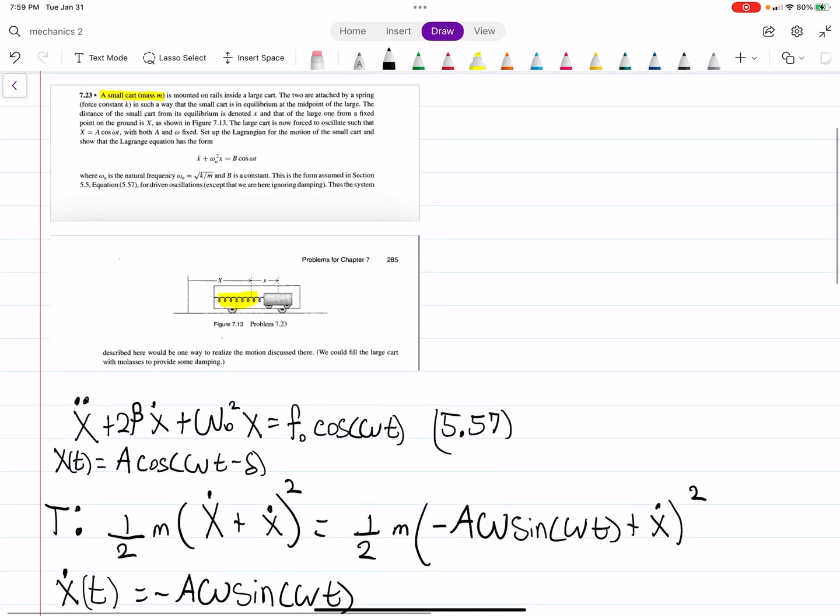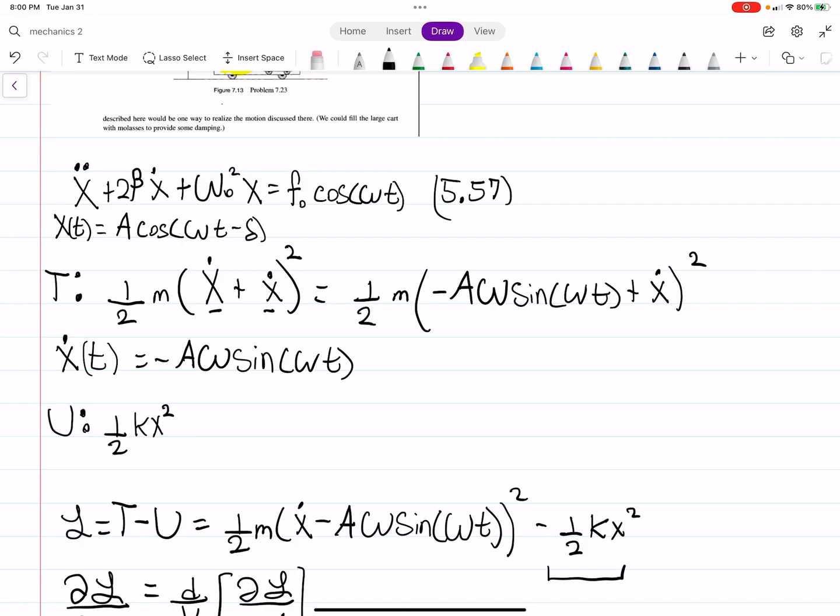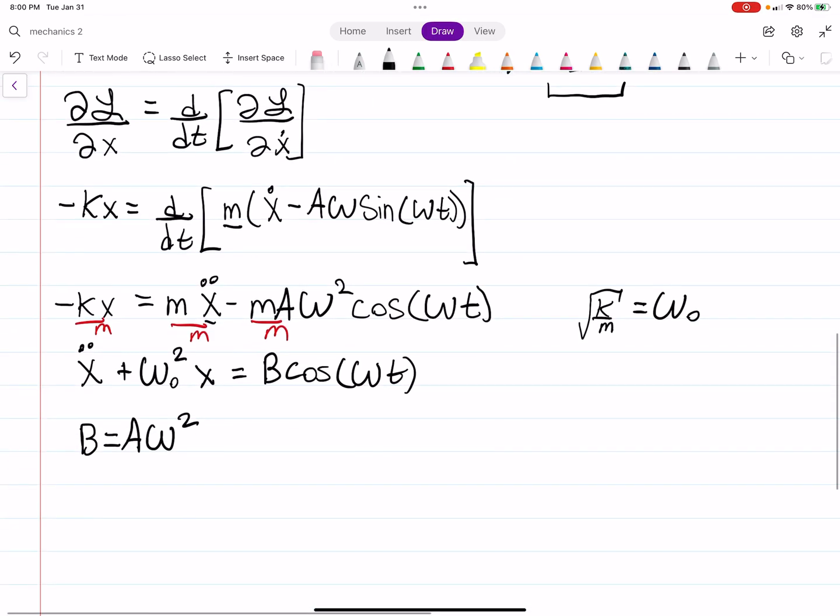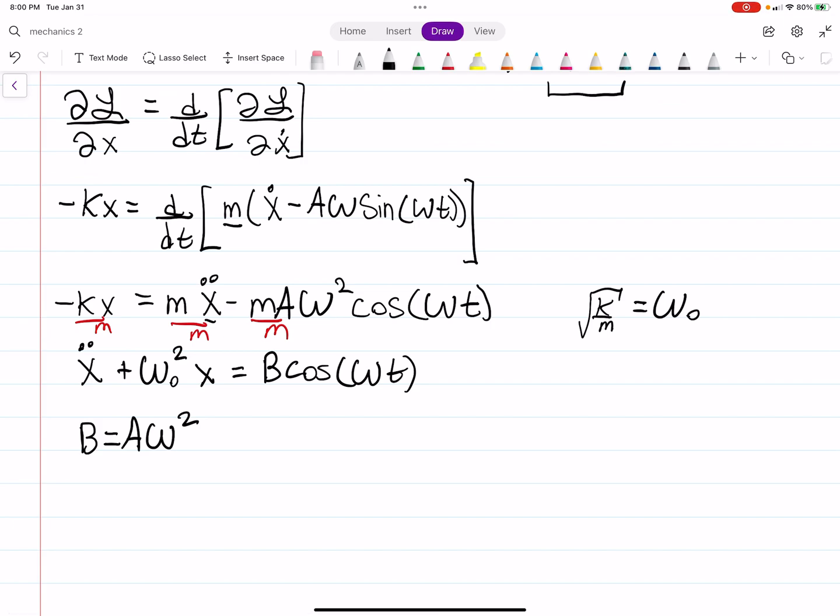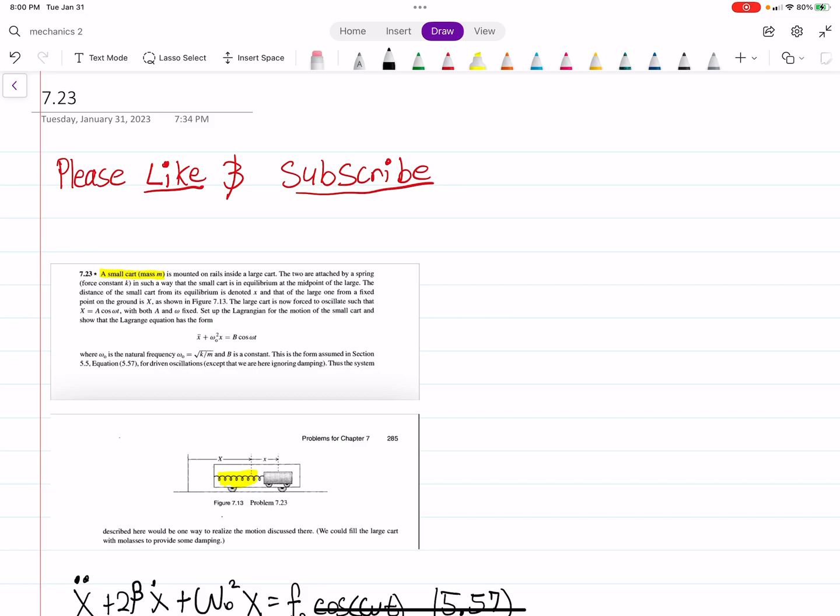So that's how you do this problem. You write down your kinetic energy. Maybe the trickiest part is just knowing that you have to add these two velocities. The velocity of the two carts added together give you the total velocity, essentially. Write it down as your oscillating function. Make sure you do the derivative. Write down your potential energy. Write down your Lagrangian. Do your Euler-Lagrangian. And then with just a little bit of rewriting, you can write the equation the way that we want it to. So hopefully that makes sense. If it did, please like the video and subscribe.